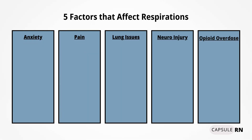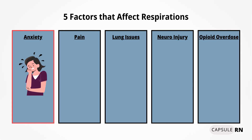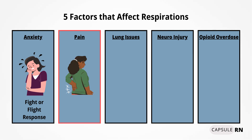There are five factors that can increase or decrease respirations that you should make sure you know as a nurse. First is anxiety. Anxiety activates stress hormones that are part of the fight or flight response, which causes physiological changes in the body, one of which is increased breathing. Second is acute pain. Acute pain is a signal that tells the body that something is wrong and will often activate that stress response, in which the body reacts with an increased heart rate, an increased blood pressure, and an increased respiratory rate.